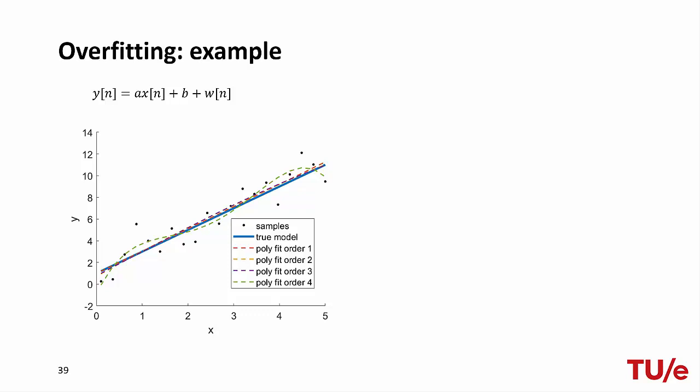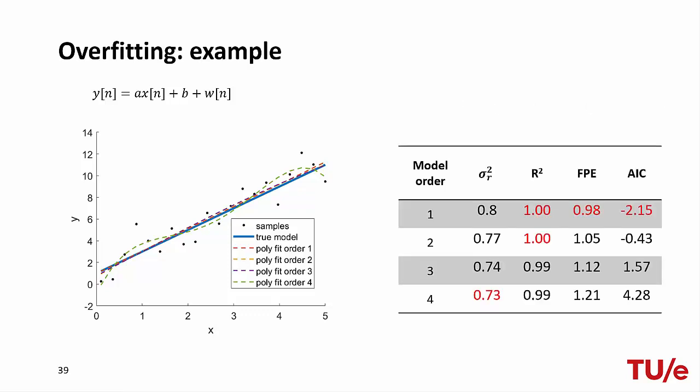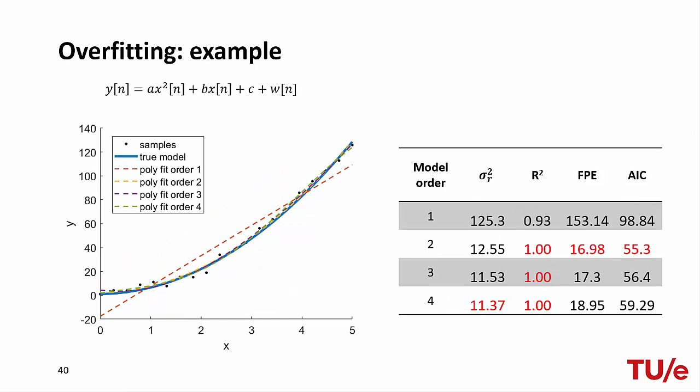To illustrate how to use these criteria, we show an example in which we simulate observations from an order-1 polynomial with added Gaussian noise, then fit the model with polynomials of increasing order. We see that the variance of the residuals always decreases with increasing model order. If we were to use R-squared, orders 1 and 2 would be judged equally good. But with FPE and AIC, we retrieve the correct model order. Repeating for a second-order model leads to similar conclusions: the model error always decreases, R-squared is unsuitable for comparing models of different orders, while FPE and AIC provide good guidance.